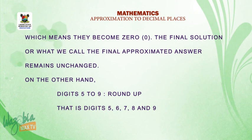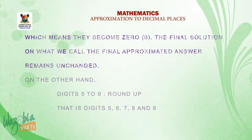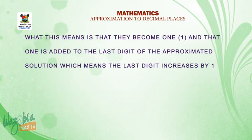On the other hand, digits 5 to 9 are rounded up: digits 5, 6, 7, 8 and 9. What this means is that they become 1 and that 1 is added to the last digit of the approximated solution, which means the last digit increases by 1.